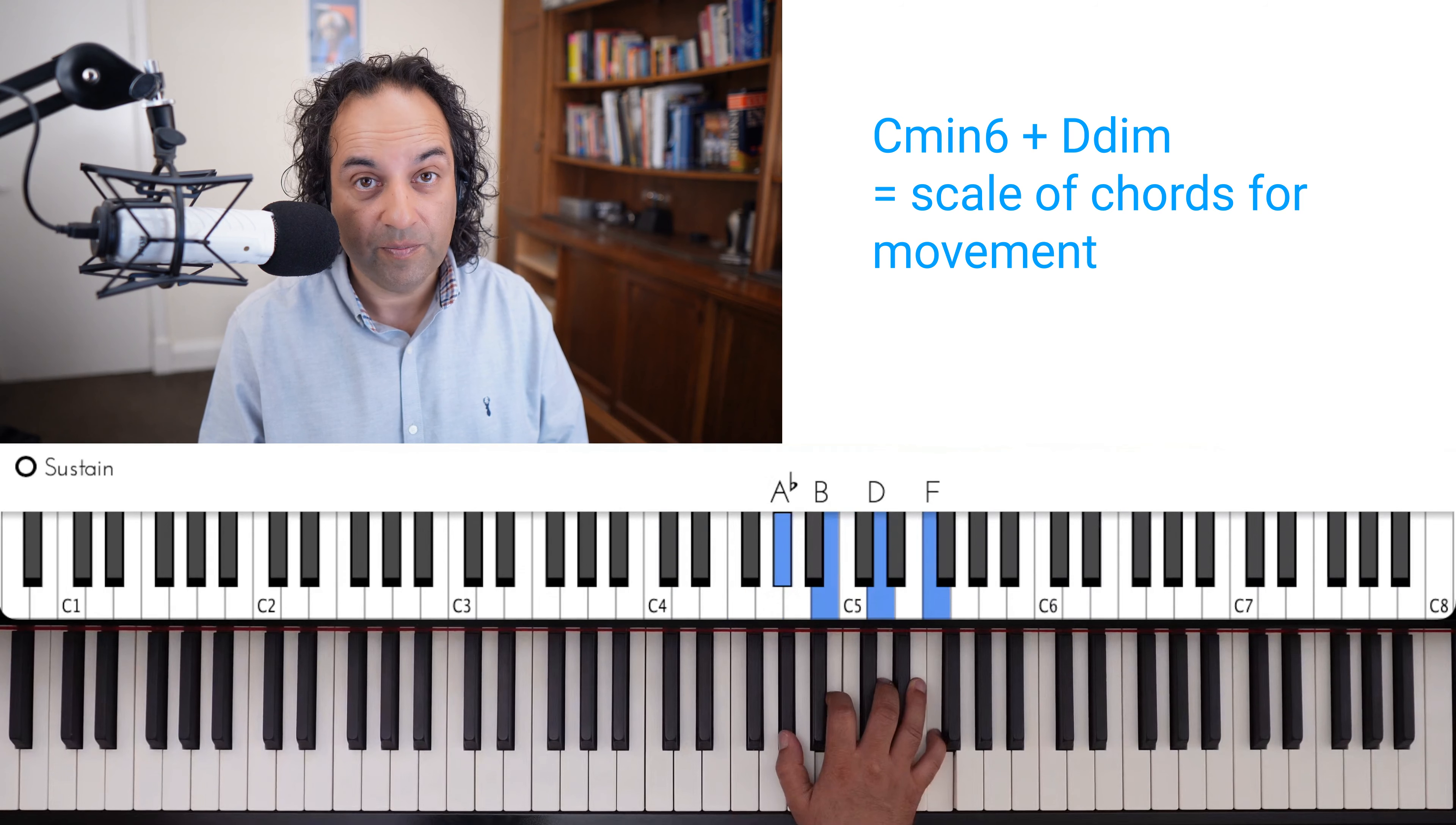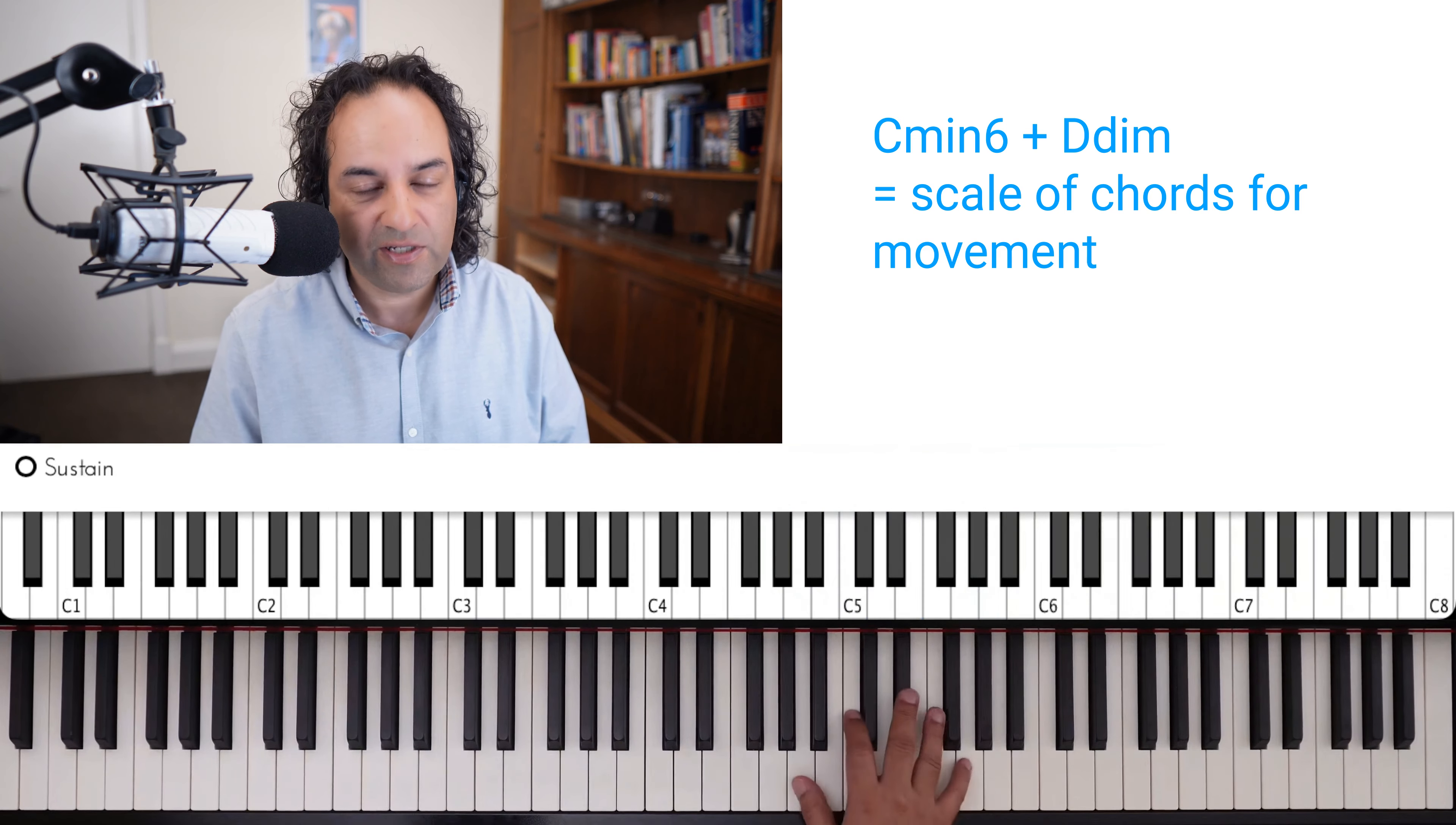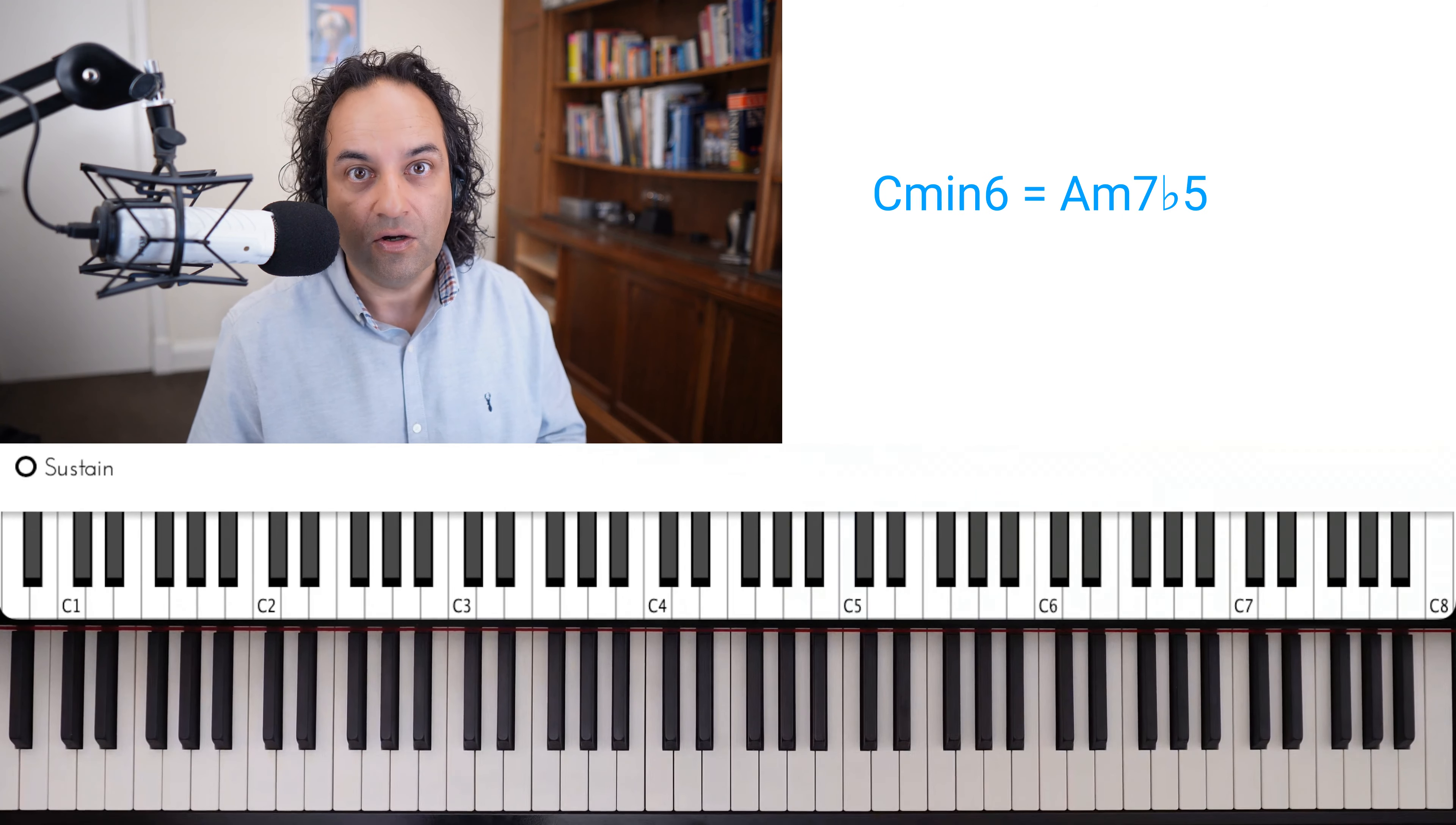This is the one that people often get wrong because they're not used to going from here to here. C minor six again, D diminished and back to C minor six. The reason I stopped here is because notice this is also an A minor seven flat five, or A half diminished. And this really connects into our movements quite a lot.